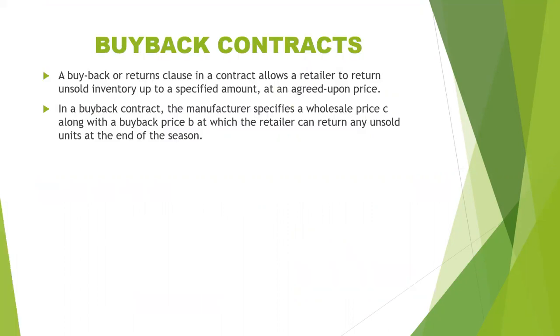There are three different types of contract in supply chain management. They are buyback contract, revenue sharing contract, and quantity flexibility contract. Now let us see about the first contract, buyback contract.